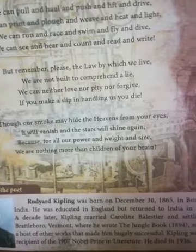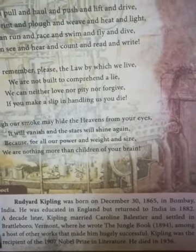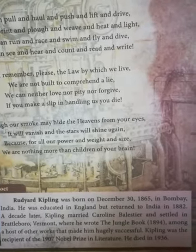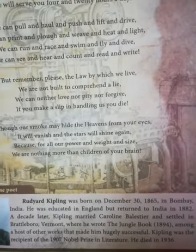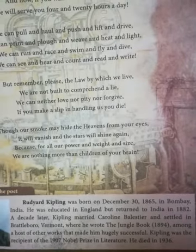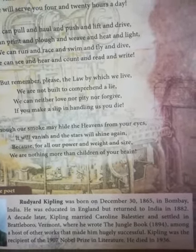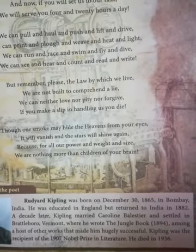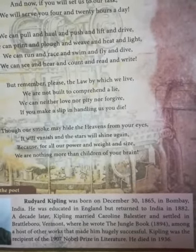Rudyard Kipling was born on December 30, 1865, in Bombay, India. He was educated in England but returned to India in 1882. A decade later — that means after 10 years — Kipling married Caroline Ballester and settled in Brattleboro, Vermont, where he wrote The Jungle Book. Have you seen the famous movie The Jungle Book? It was written by him, among a host of other works that made him hugely successful.